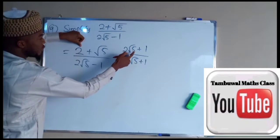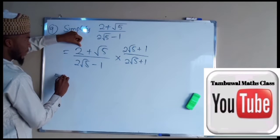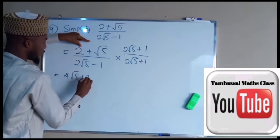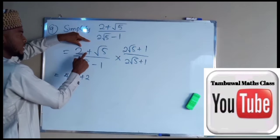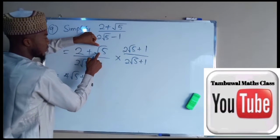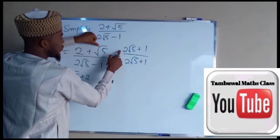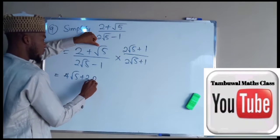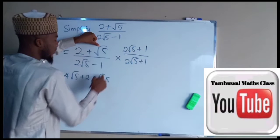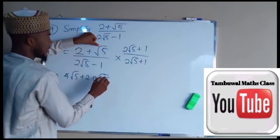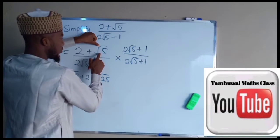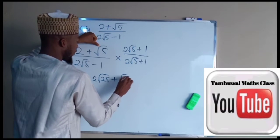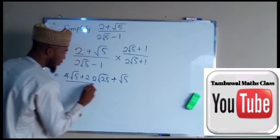2 times 2 root 5 will have 4 root 5, 2 times 1 will give us 2. Then the next one, this is root 5 times 2 root 5 which is 2 root 25 because 5 times 5 is 25. Then the next one is root 5 times 1 which will give us root of 5, all divided by